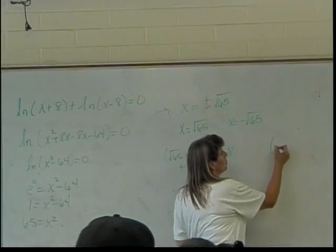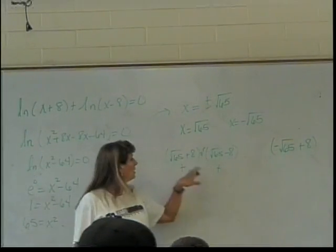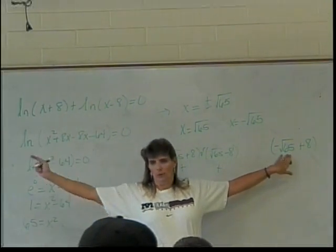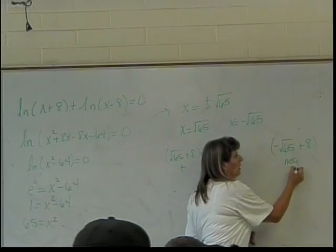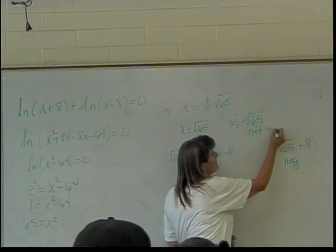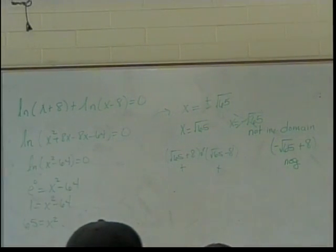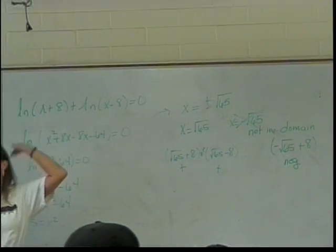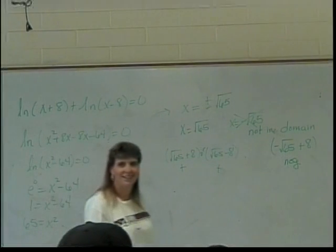Now what about my negative square root of 65? A negative square root of 65 plus eight. Well, if this was a little bigger than eight, then this is a little on the other side of negative eight something or other. So negative eight something or other plus eight is going to be negative. And actually, once I get that, I can stop. I can say, this is no good. It's not in the domain. I don't even have to plug it into the other one. All it takes is for it to be bad in one or the other for us to throw it out. Okay, so I've now done my two pieces. That's what I wanted.